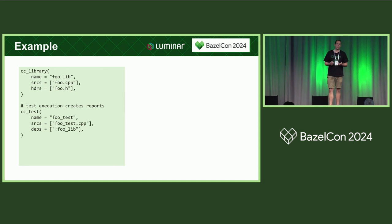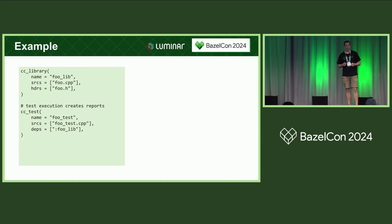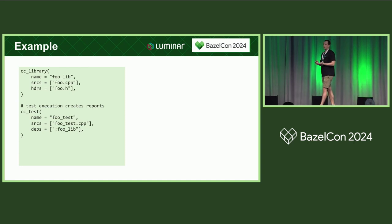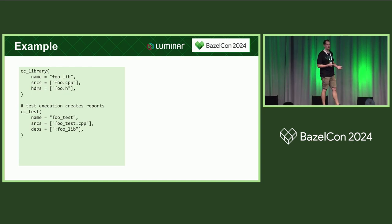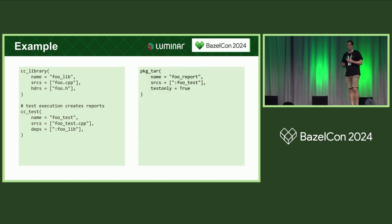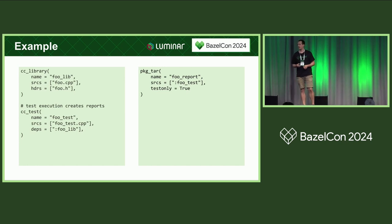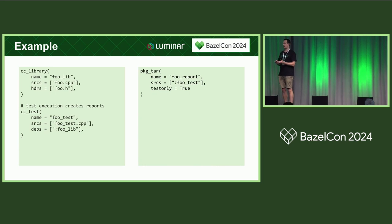We have a C++ codebase, and with that typical scenario we have our CC libraries, CC tests, and we can build and run these tests. But due to the automotive industry, with all the software we ship and provide, we have to provide some reporting. These reports are all generated from the test execution. Ideally, I would want to say I use a package tar, name it, put my test in as a source, and simply generate or get the report of that test into my tar output.